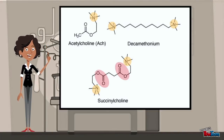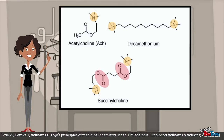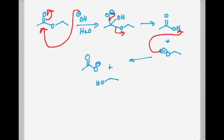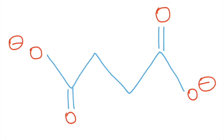Acetylcholine is a neurotransmitter related to motor and memory function, found in both the CNS and PNS. Cholinesterase enzymes work by a base-promoted hydrolysis mechanism. Water present in the body acts as a nucleophile and attacks the carbonyl of the ester to produce a tetrahedral intermediate. This intermediate then decomposes producing a carboxylic acid and an alkoxide, which is a very strong base. This then attacks the OH group of the carboxylic acid and a proton transfer occurs, producing a carboxylate salt and an alcohol — in this case, succinate and choline.